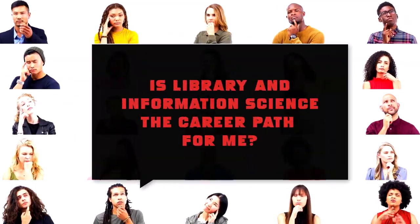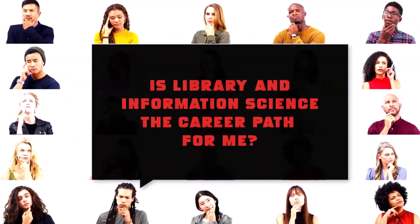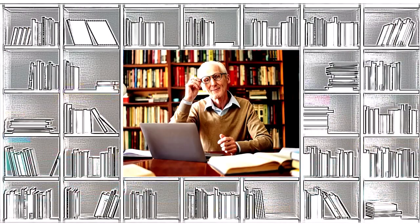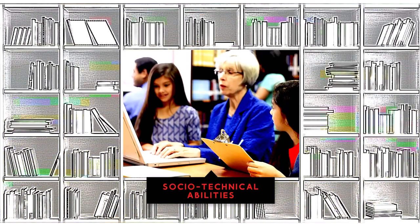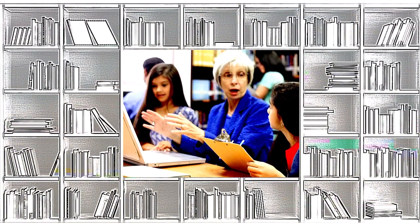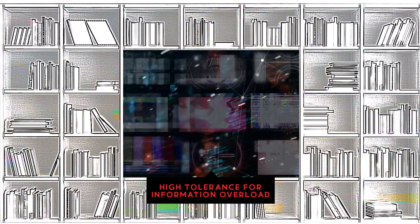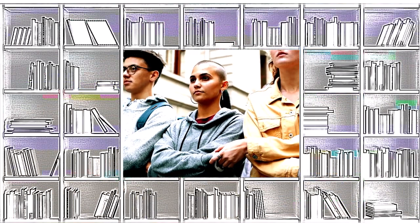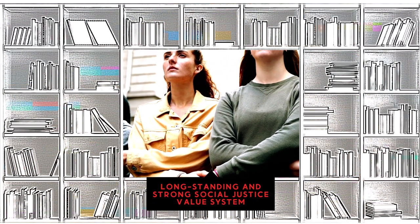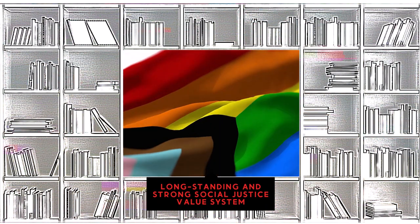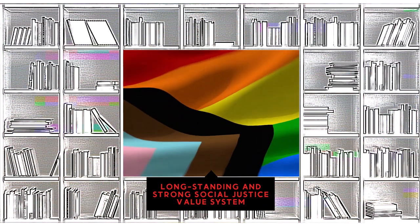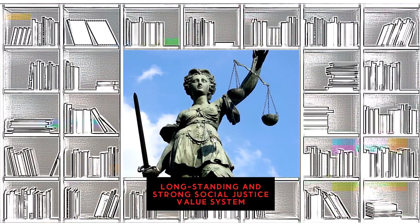You may be wondering: is Library and Information Science the career path for me? Though every librarian is different, we do share some qualities. We have a balance of socio-technical abilities and enjoy working with both people and information systems. We have an unusually high tolerance for information overload and are comfortable in the midst of millions of publications. Finally, Library and Information Science has a long-standing and strong social justice value system. We champion democracy, diversity, equity and inclusion, equal access to information, and intellectual freedom.